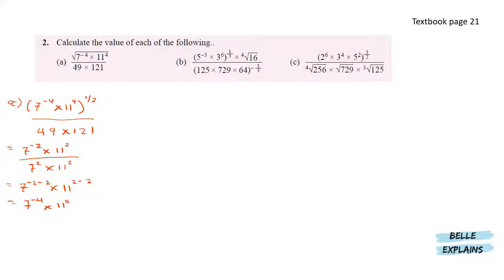Any number to the power of 0 becomes 1. So here we have 1 over 7 to the power of 4, times 1, which gives us 1 over 2,401.